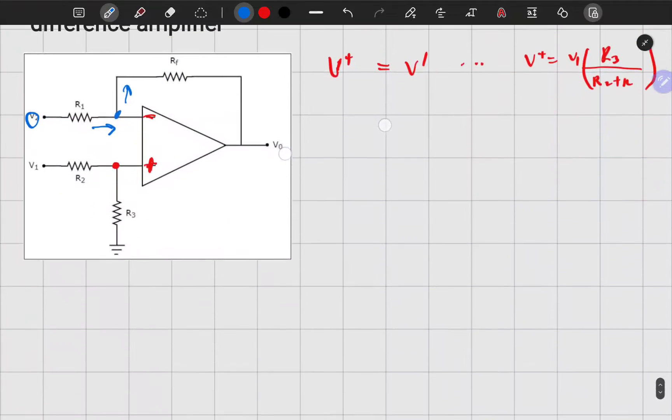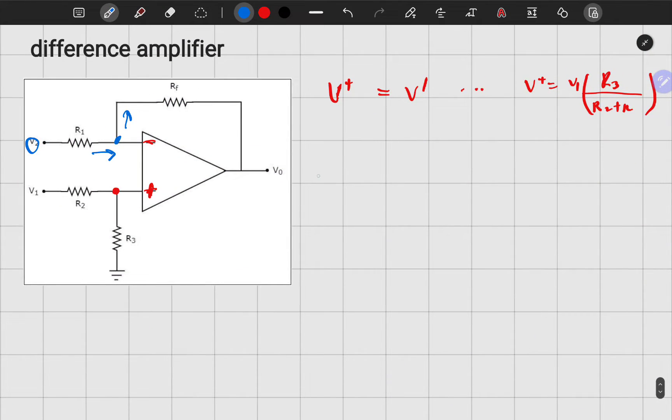So we'll have V2 minus V_minus all over R1, so it equals to V_minus minus V_naught all over RF. And I'm trying to solve for this guy.